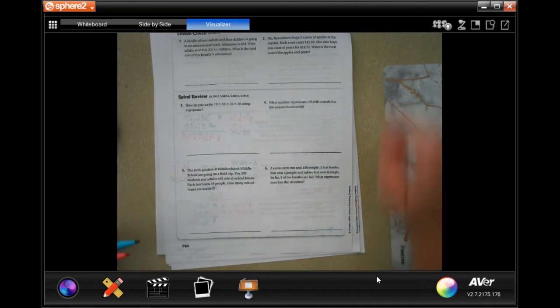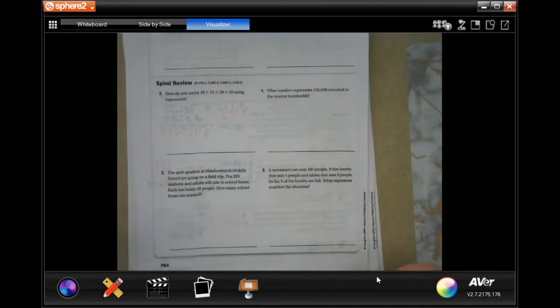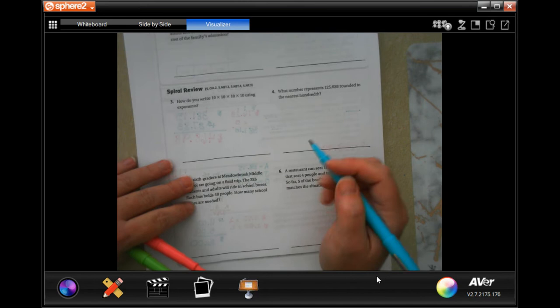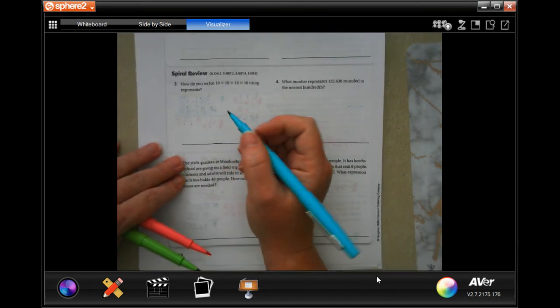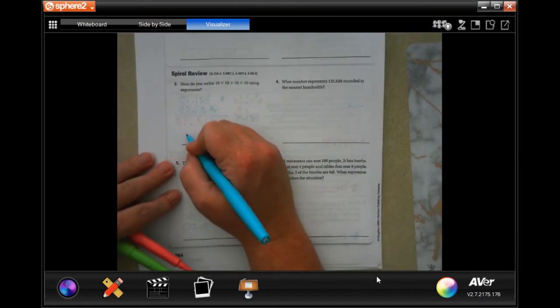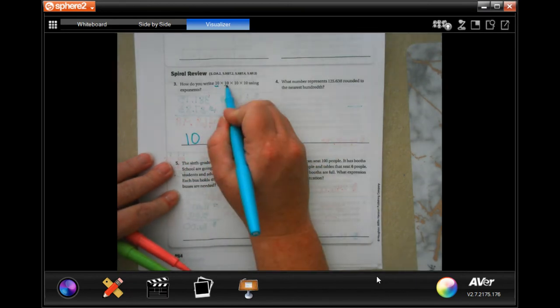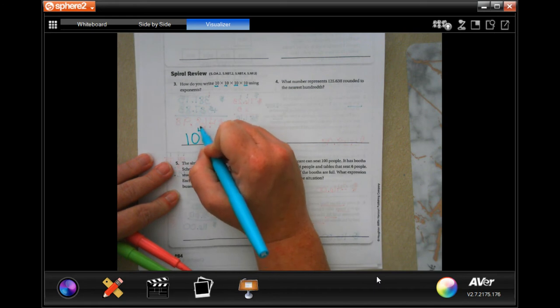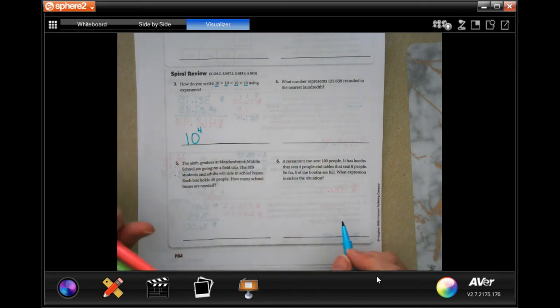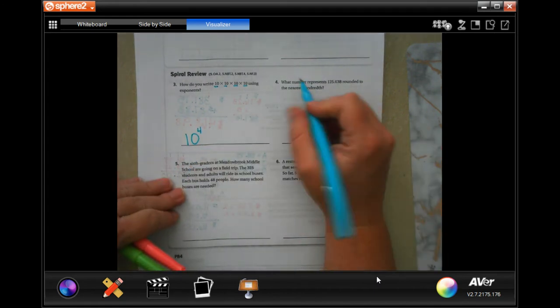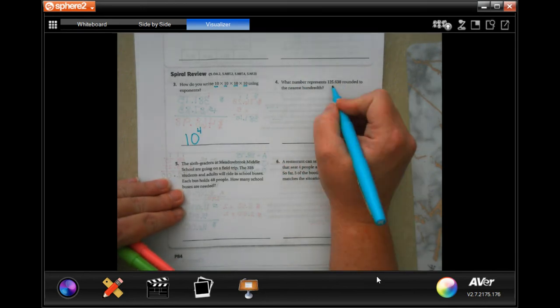I'm going to zoom in a little bit. Now we love exponents because it just tells us how many times we're going to multiply it. So 10 is always my base with these, and there's one two three four of them, my exponent is 4. Super easy.